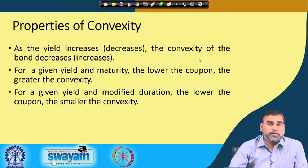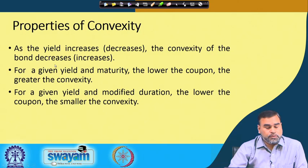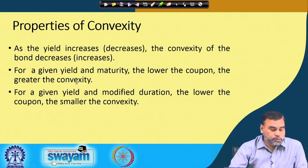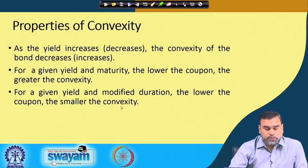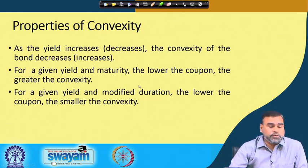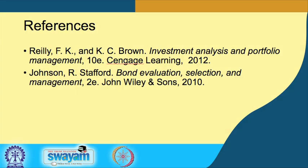The properties of convexity are: as the yield increases, the convexity of the bond decreases. For a given yield and maturity, the lower the coupon, the greater the convexity — similar to duration. For a given yield and modified duration, the lower the coupon, the smaller is the convexity. Please go through the references for this particular session.